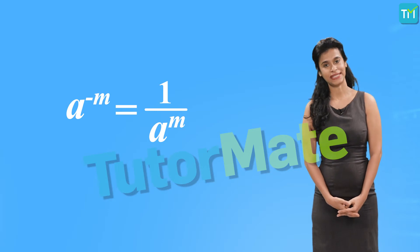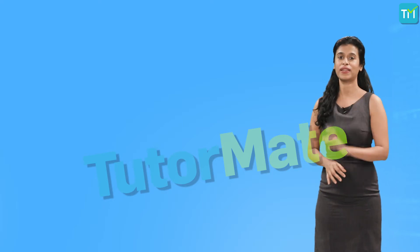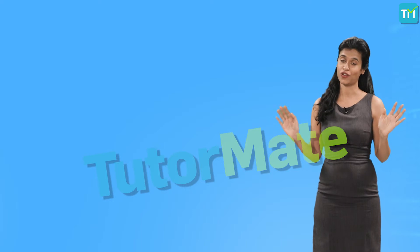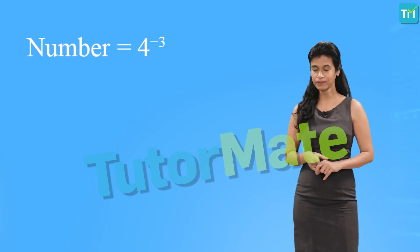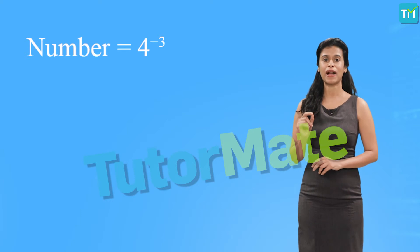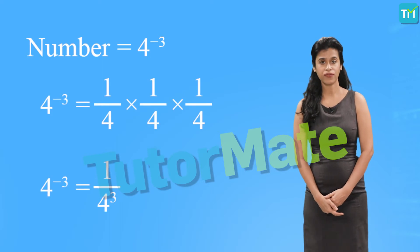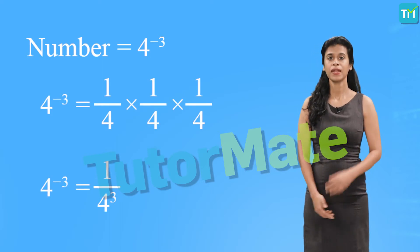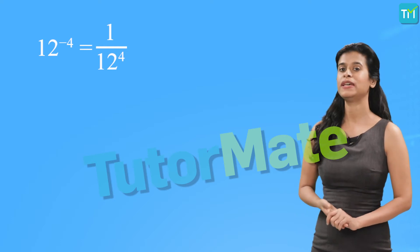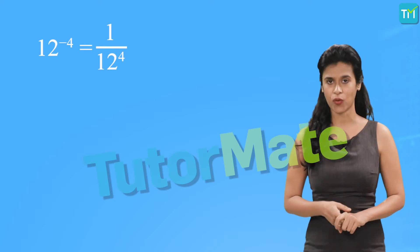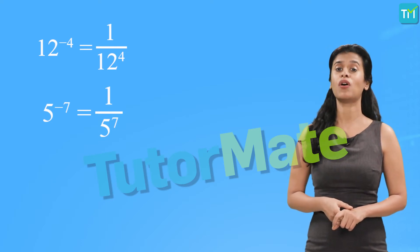We will discuss this in more detail later. For now, let us apply this standard expression to some examples. The first number is 4 raised to minus 3. Applying the rule — a raised to minus m equals 1 upon a raised to m — this is 1 upon 4 raised to 3. We can now apply this rule to any number. For instance, 12 raised to minus 4 will be equal to 1 upon 12 raised to 4. Similarly, 5 raised to minus 7 will be equal to 1 upon 5 raised to 7.